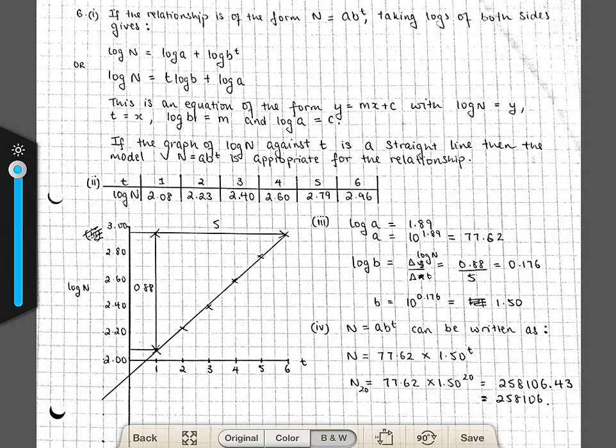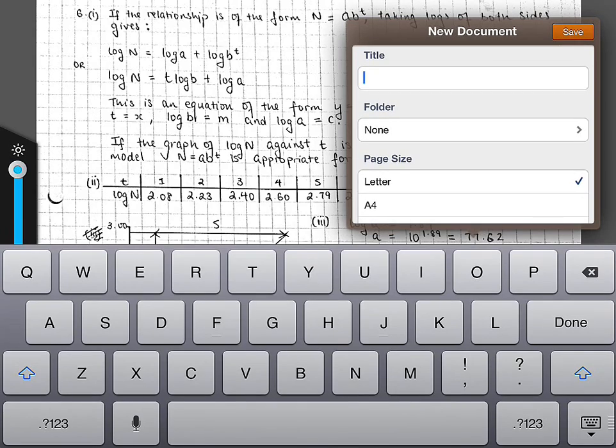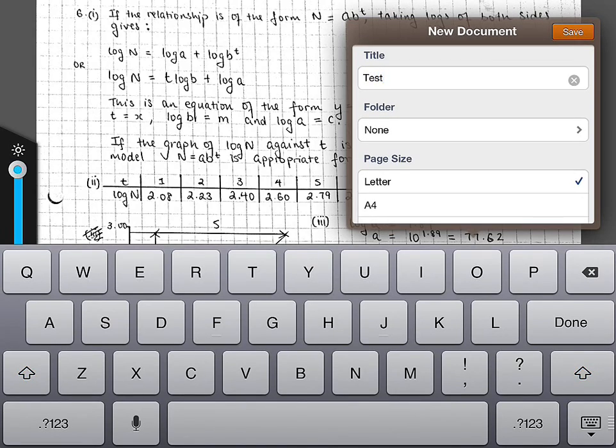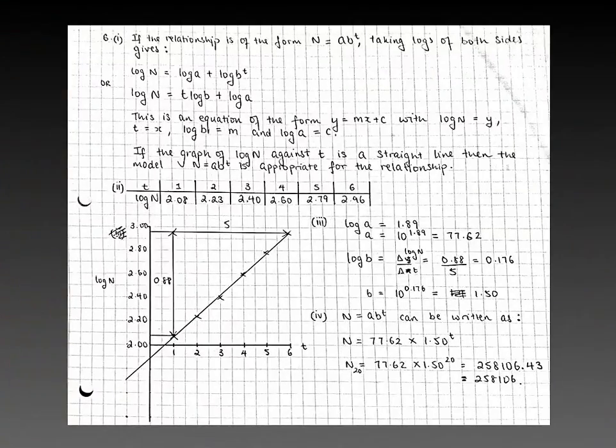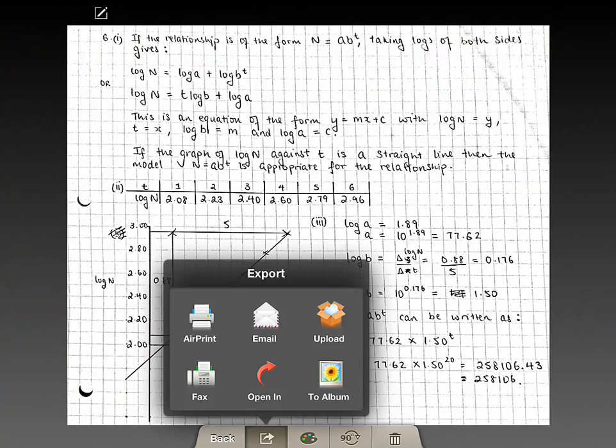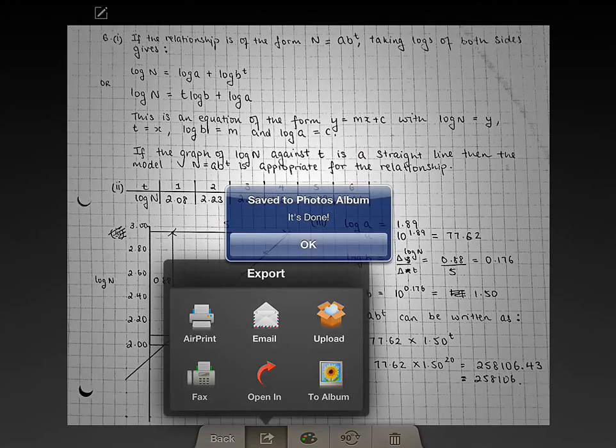I'm going to click Save, give it a title—let's go with Test—and click Save. There you go. Now I'm going to take that image and put it into my album. That's done.